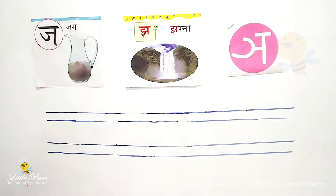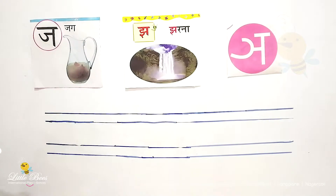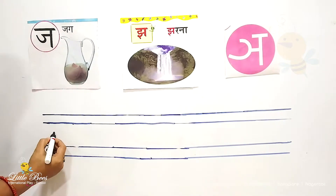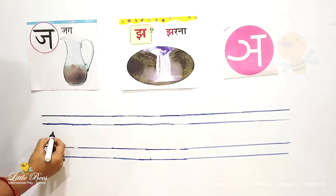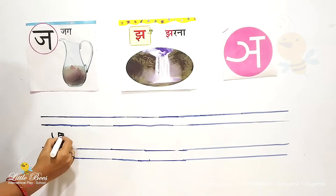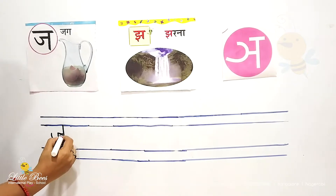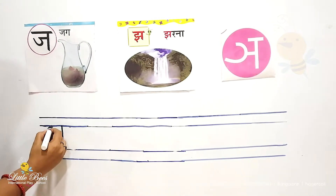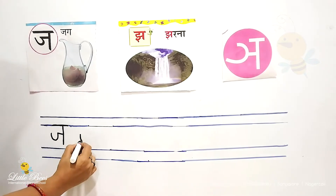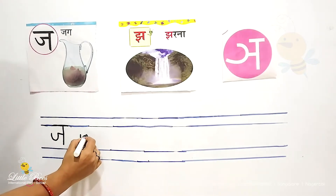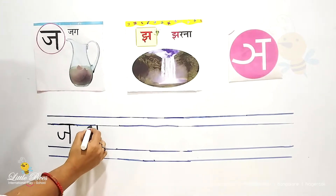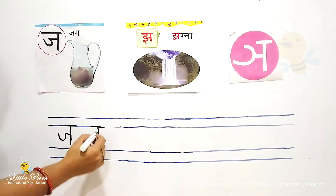So let's see how to write this Vengell in your notebook. First we will make a curve, a curve, a small flipping line and a standing line — Jha. We will write it again: a curve, a curve, a sleeping line and a standing line. Jha. Say Jha.